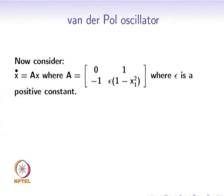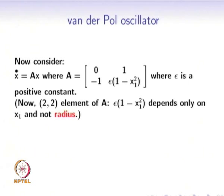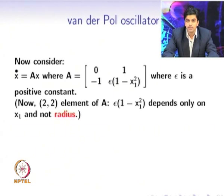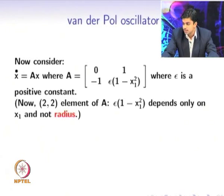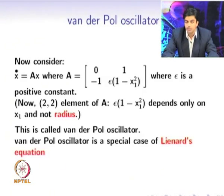Next we will consider the Van der Pol oscillator, which is a non-linear oscillator. The system has the form x_dot = Ax where A = [0, 1; –1, ε(1 – x1²)]. Here ε is a positive constant. One diagonal element depends only on x1², not on x2², so this system is called the Van der Pol oscillator and is a special case of Liénard's equation.